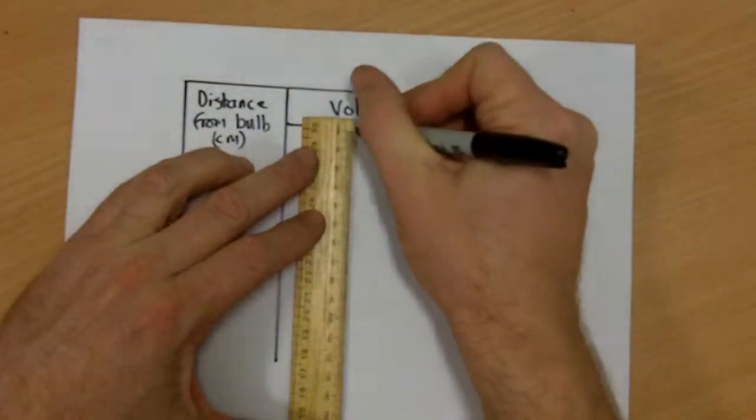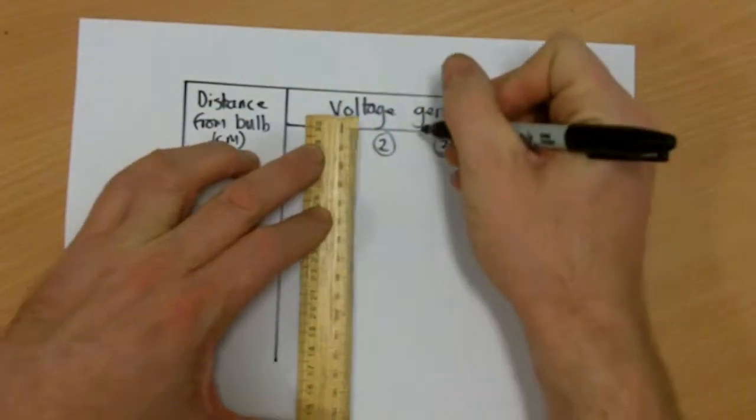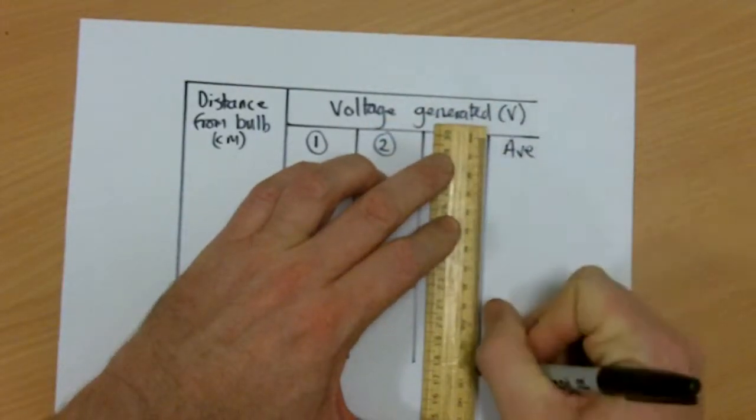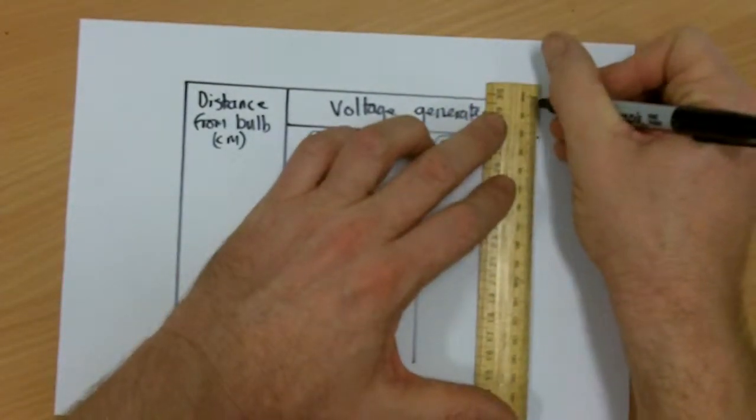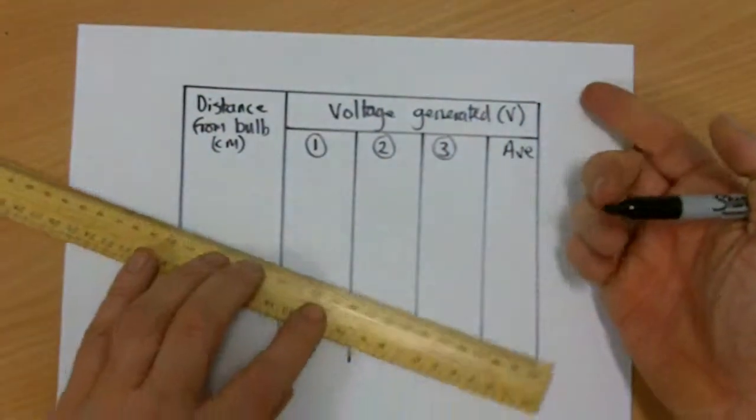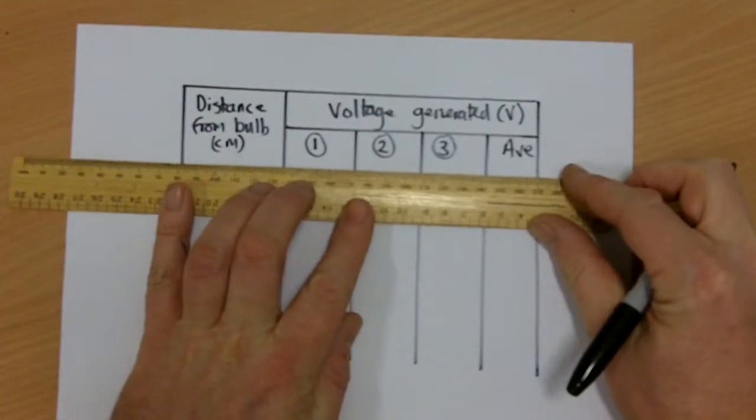Now, it's important that your column headings always have units in. So if you've got one column heading across all of your voltages, that means that everything in there must be read in volts. So here's my table of results ready to be filled in.